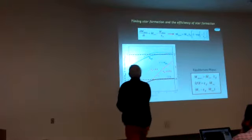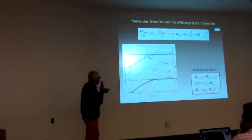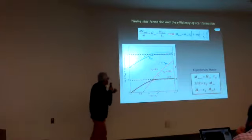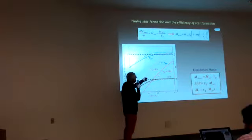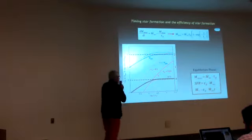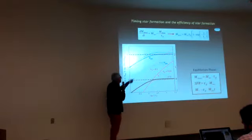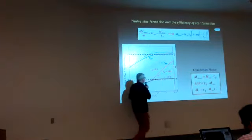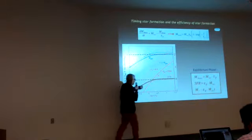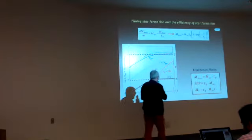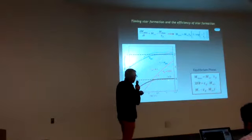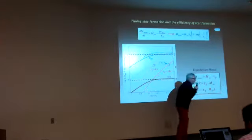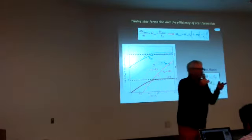We solve this equation and look at how the gas mass evolves with time in our bathtub. This is the mass of the gas normalized to the equilibrium value. Initially you have the linear rise, and then you get a constant factor. If you do this for the star formation rate as a function of time, you again have the linear rise and then you get the constant factor. But there's something very interesting: the stellar mass is not achieving a constant value.